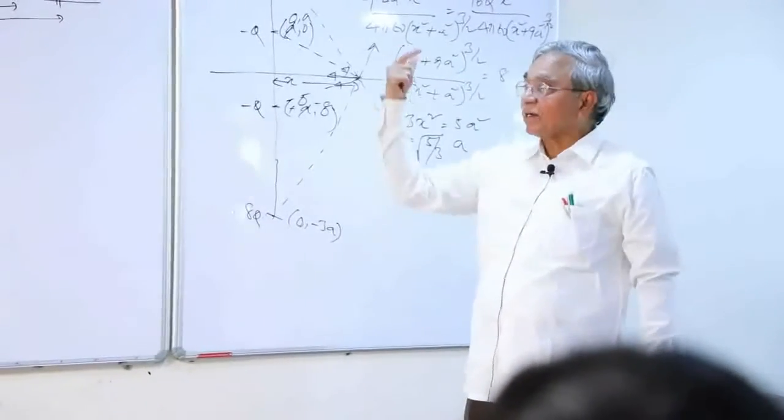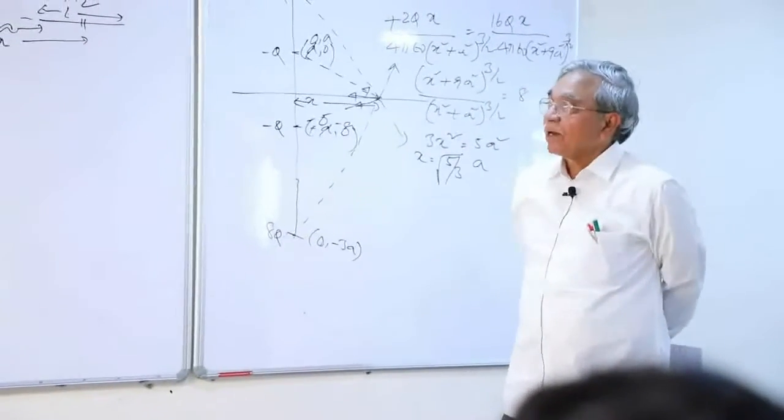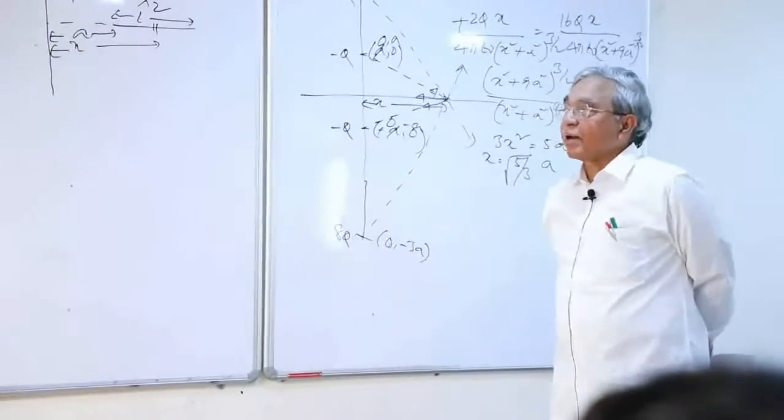Therefore, this is how the graph looks like. Now, I found two equilibrium positions.